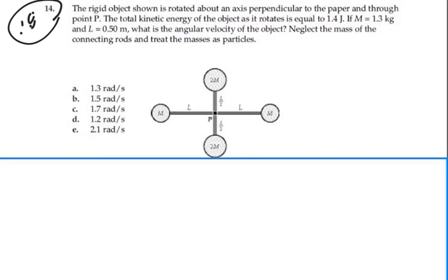Neglect the mass of the connecting rods and treat the masses as particles. So we're going to neglect the masses of the rods and just treat the system as these four point masses. In general, kinetic energy is equal to one-half the moment of inertia times the angular velocity squared.